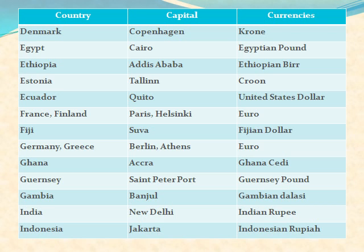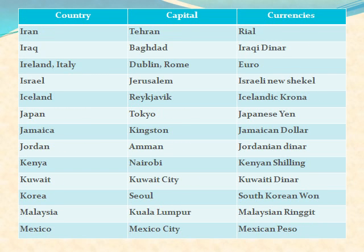Gambia: Banjul is its capital and Gambian Dalasi is its currency. India: capital is New Delhi and currency is Indian Rupee. Indonesia: its capital is Jakarta and its currency is Indonesian Rupiah. Iran: its capital is Tehran and currency is Rial.